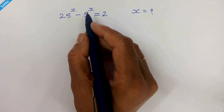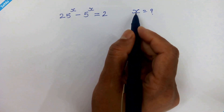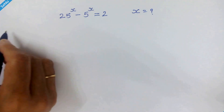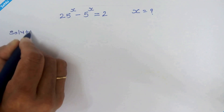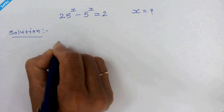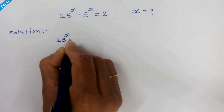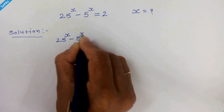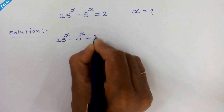Hello friends. Our given equation is 25 raised to x minus 5 raised to x is equal to 2, and we have to find the value of x. So let's start.